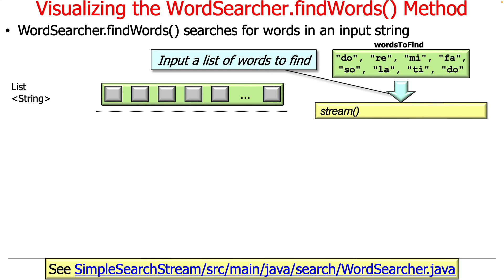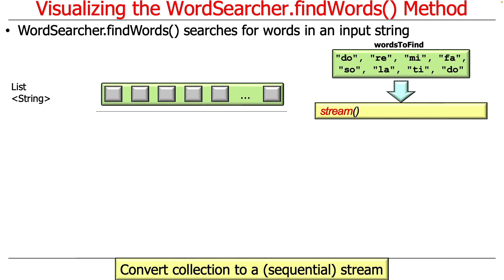So what does findWords do? It takes the list of words we're searching for and checks to see whether those words exist in the input string, which is the data that we're processing — the do-re-mi lyrics. We start out with a list of words that we want to find.